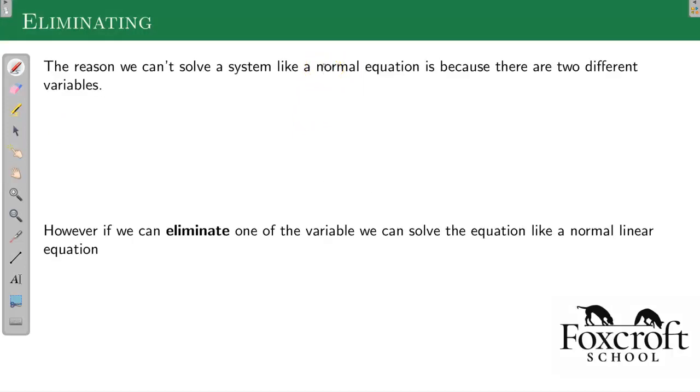The reason we can't solve a system like a normal equation is because there are two different variables. This is kind of x and y. We can't just solve for x when there's also a y.